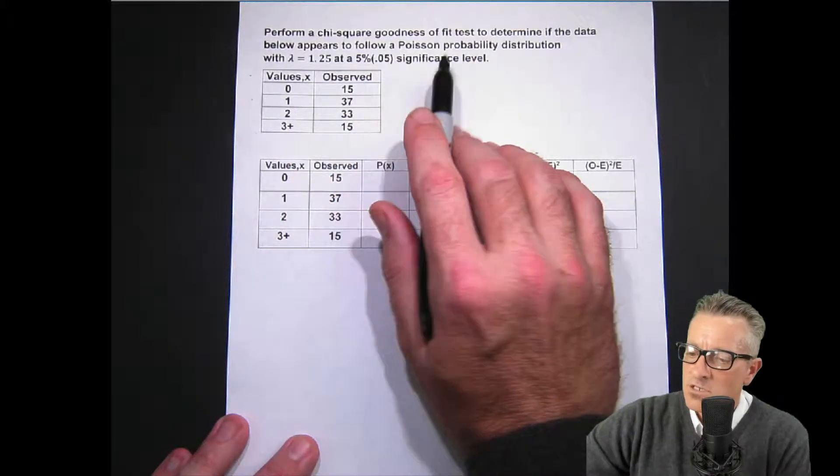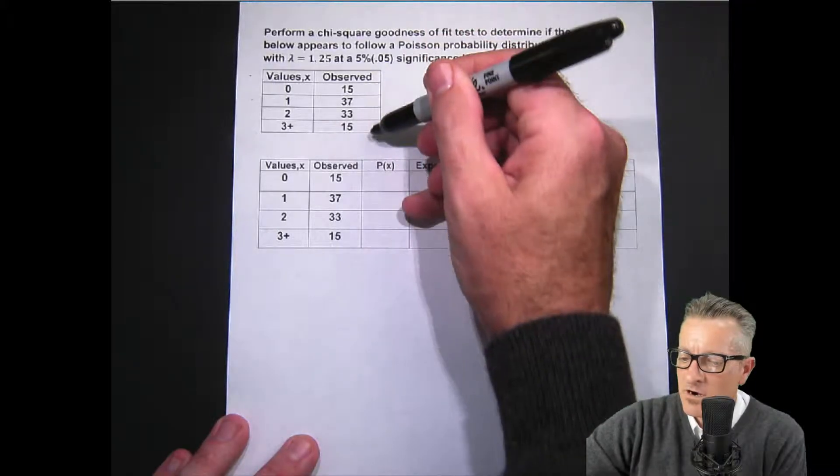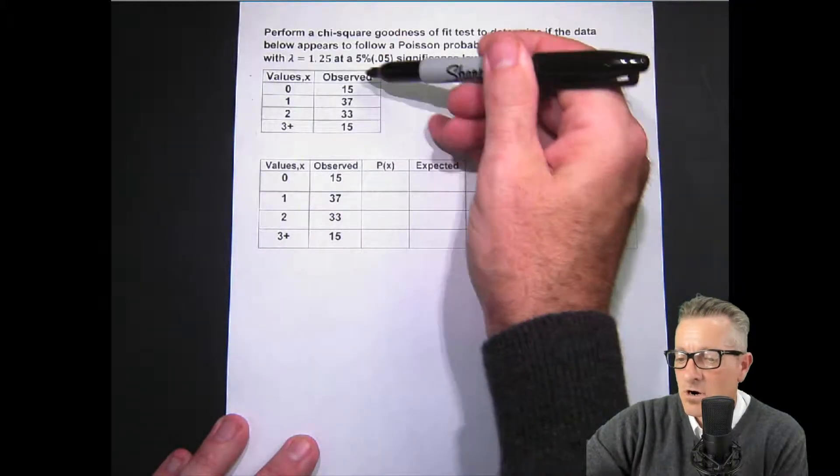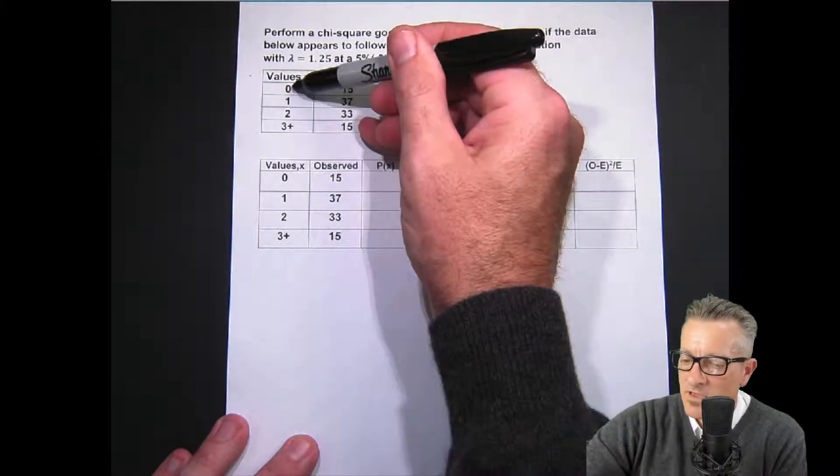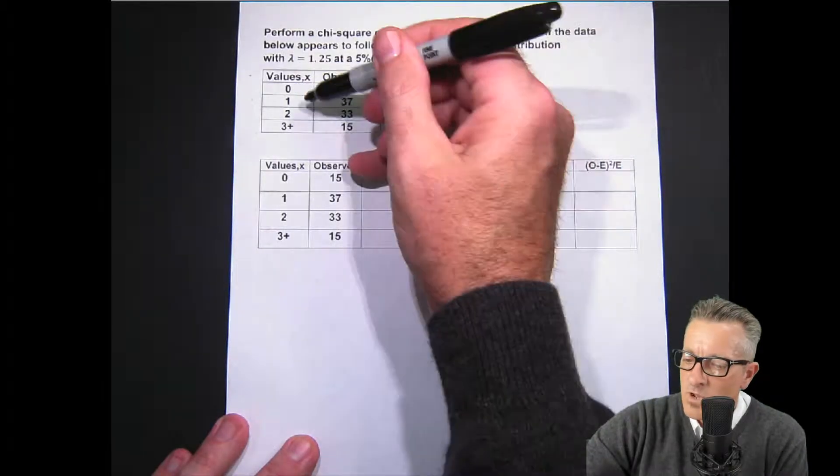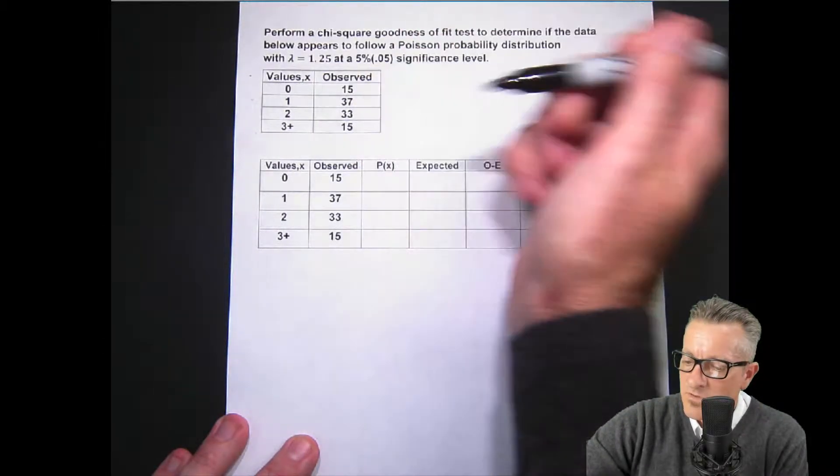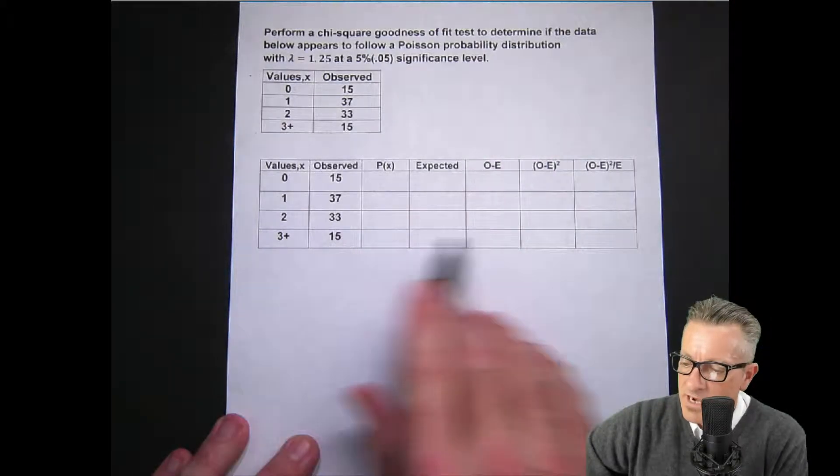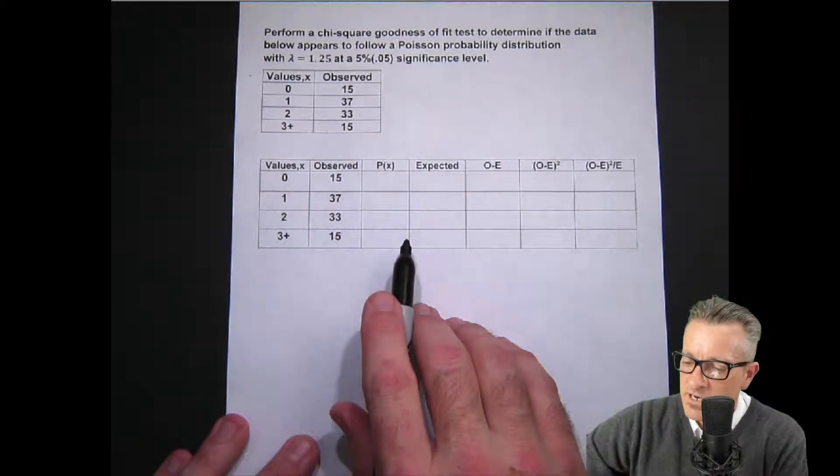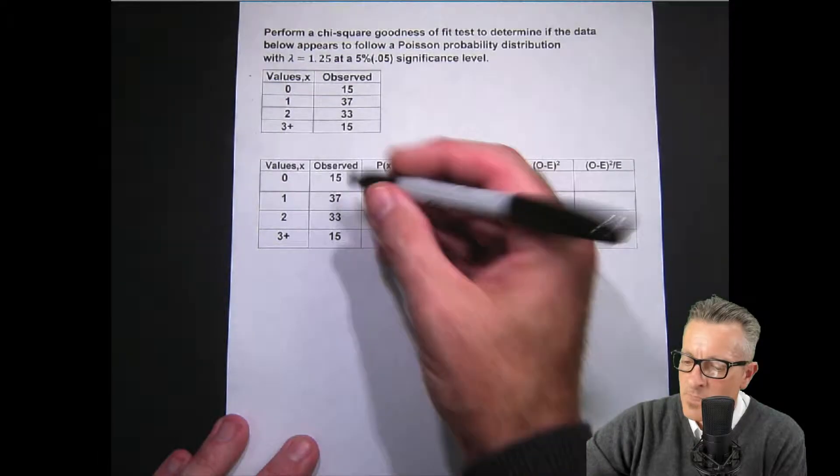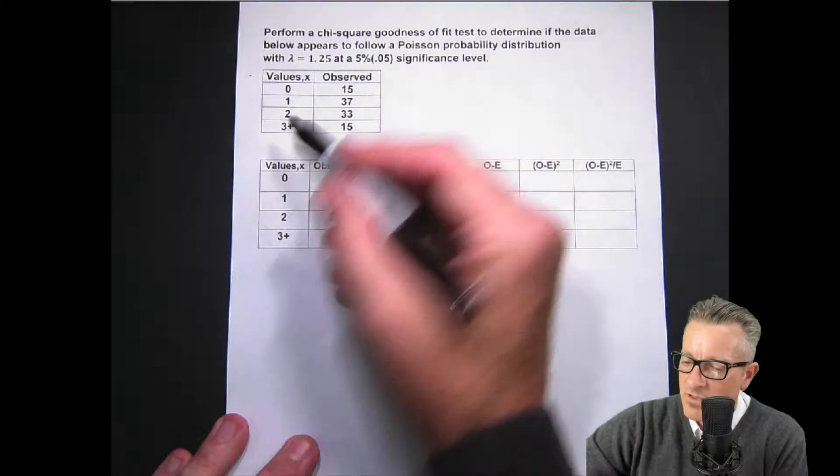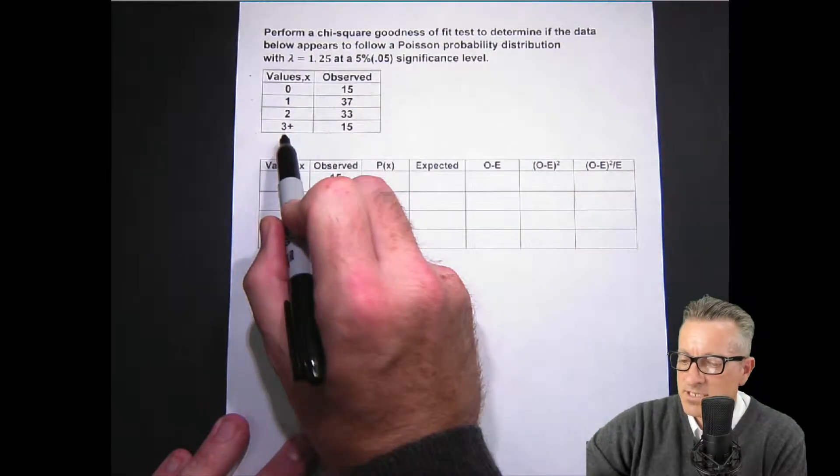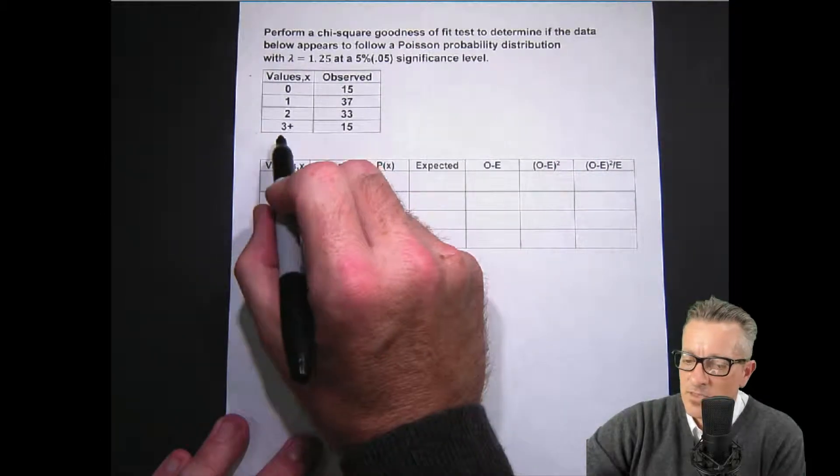These are our values right here—these are our observed values. There's all the information. Now down below I made up this table that's partially filled in to make it easy on us. These are the values—notice right here this is 3 plus, so that's 3 and everything above.